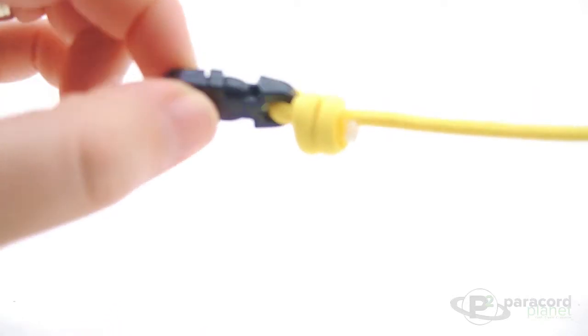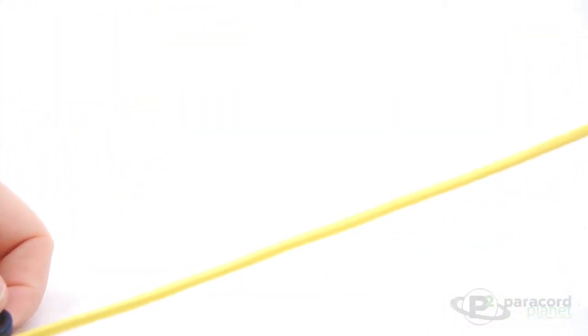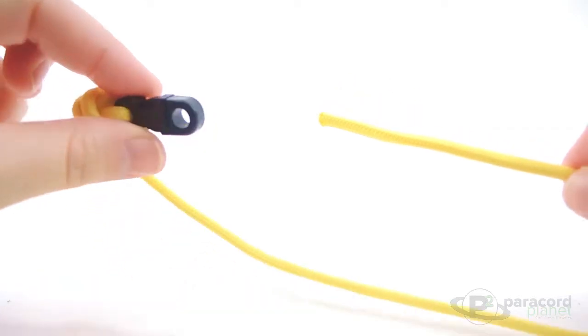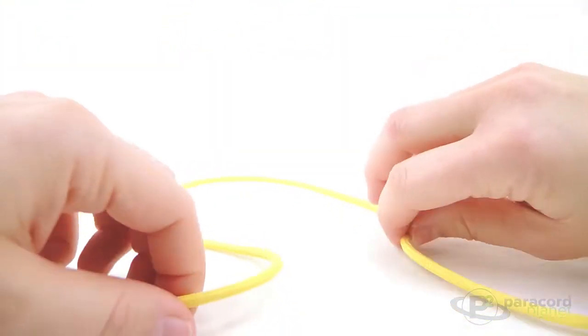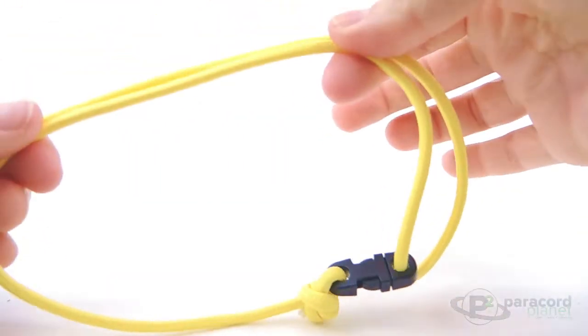Once you have your first knot done, you will want to do the same thing on the other side. So you'll take the other end of your bracelet and put it through the other end of the clasp, and then just loop it.